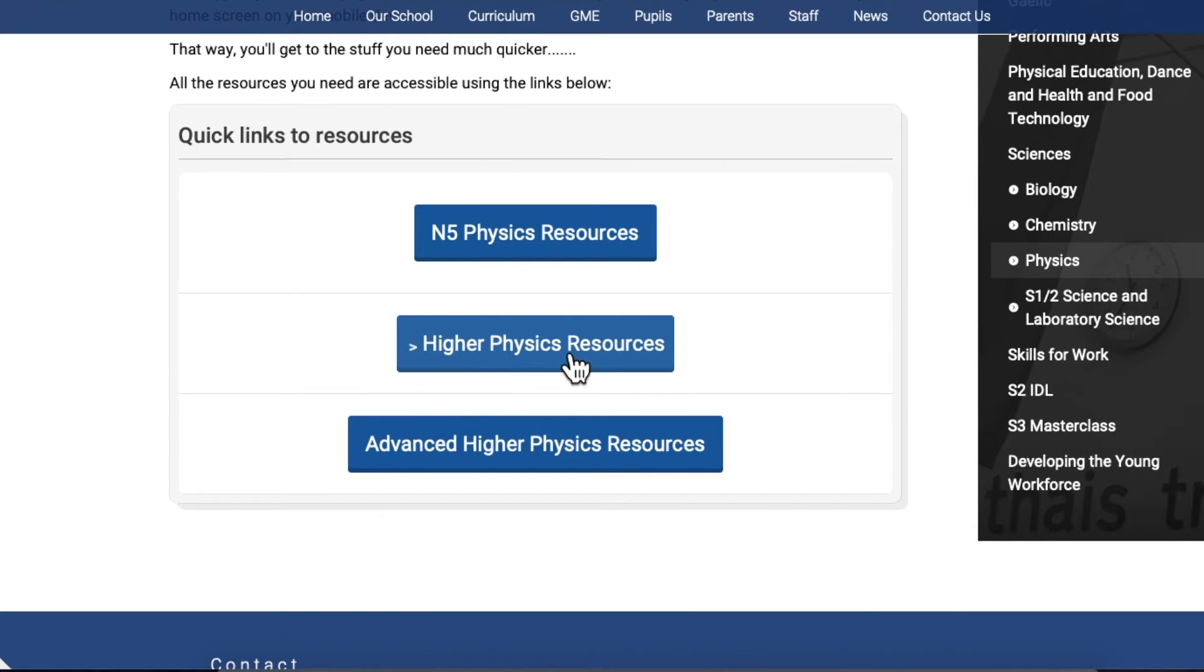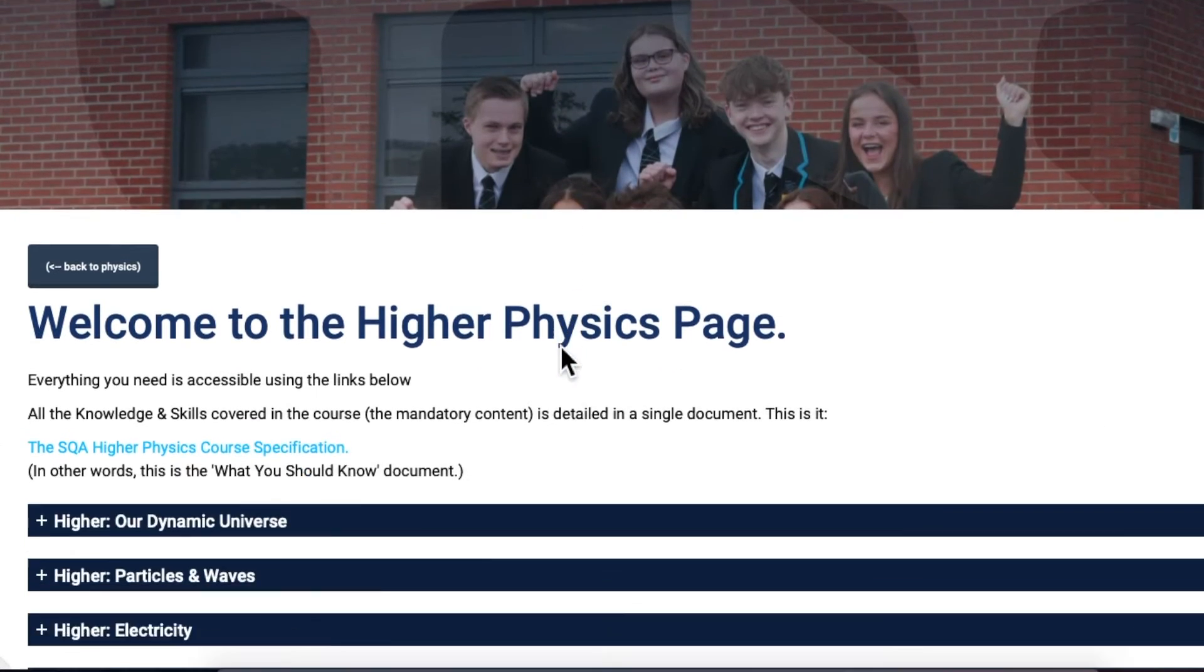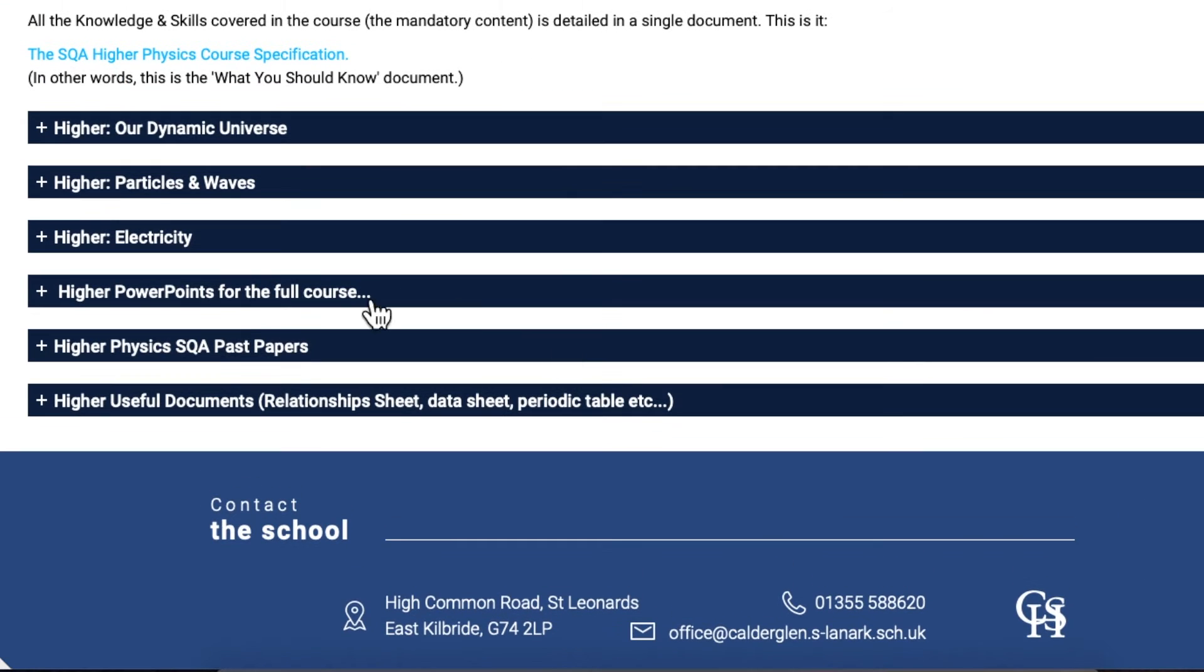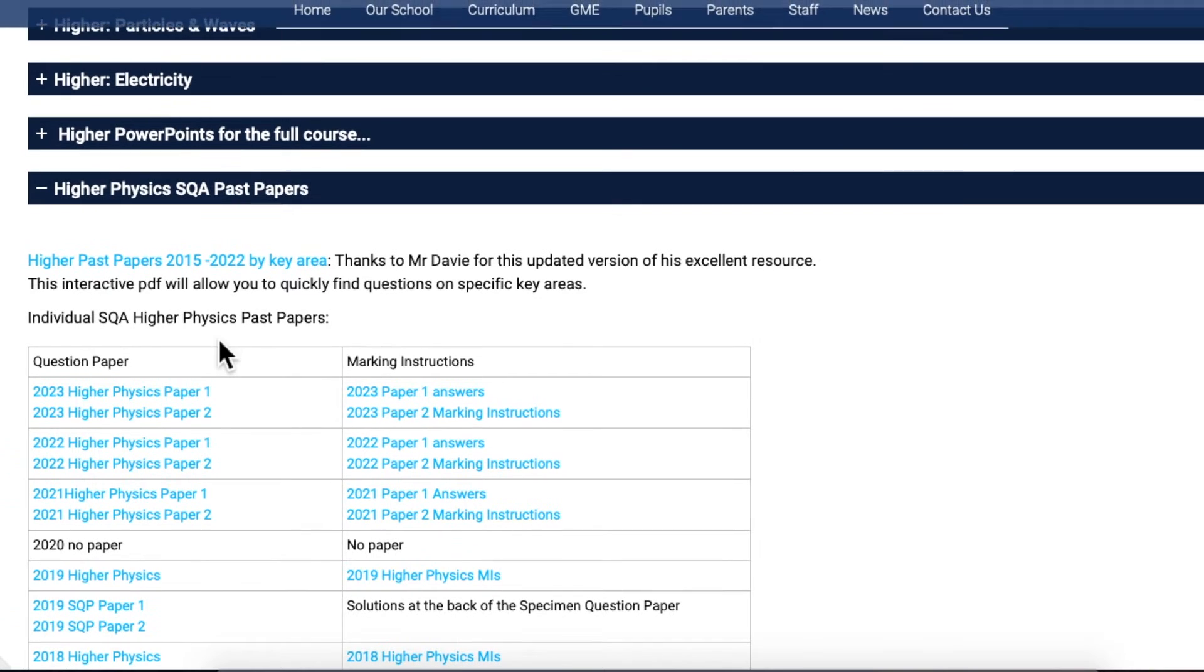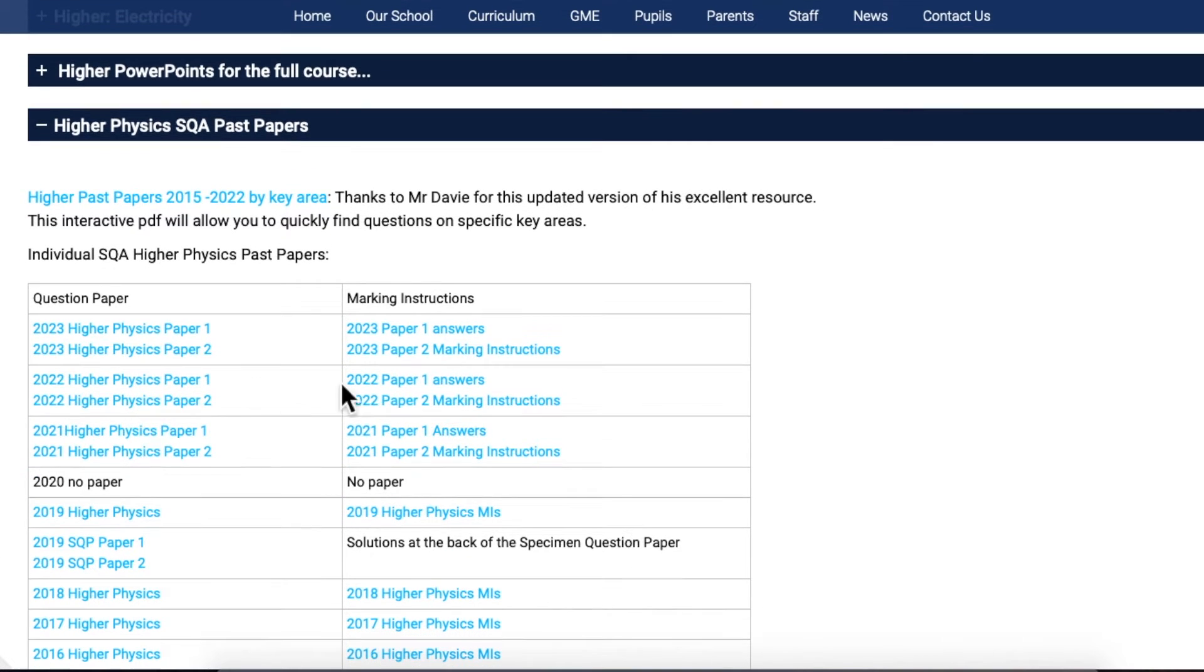Okay hello folks and welcome to another higher physics past paper walkthrough. This time it's the turn of the 2023 multiple choice paper and I'm going to the Calder Glen high school physics webpage and there's the 2023 paper there in the top row of the table.